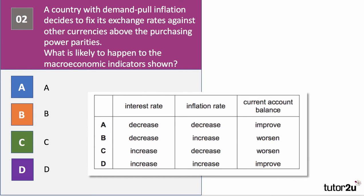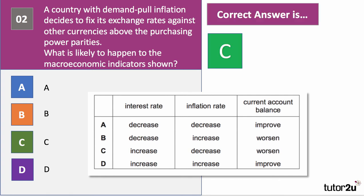The country has demand-pull inflation and is looking to exert deflationary pressure. It has fixed the currency at a high level, above purchasing power parity. The interest rate will have to be higher to maintain the strong exchange rate. Inflation will come down due to the stronger exchange rate and higher interest rates — a deflationary monetary policy. The current account will worsen: a strong exchange rate makes exports less competitive and makes imports cheaper. The answer is C.